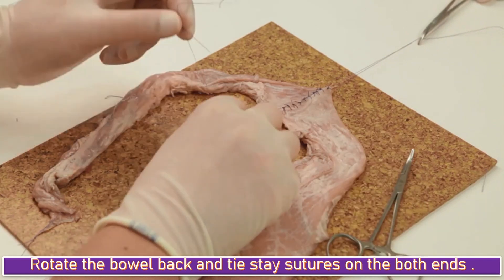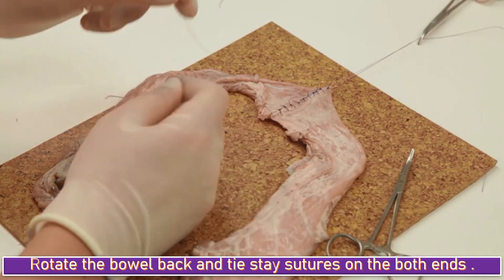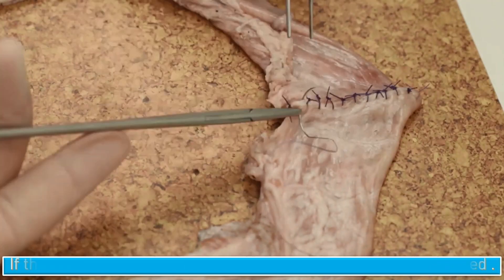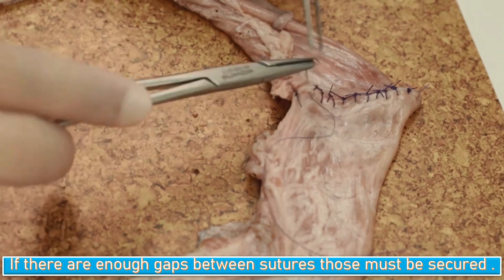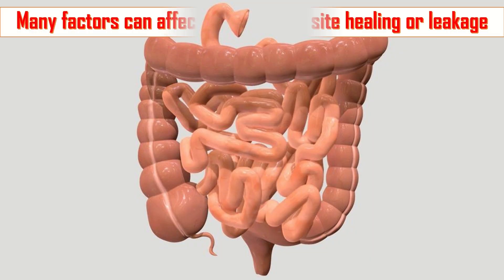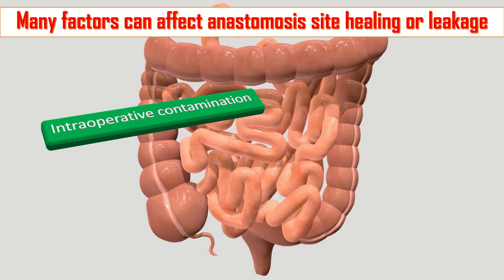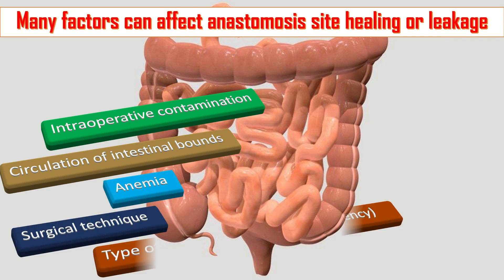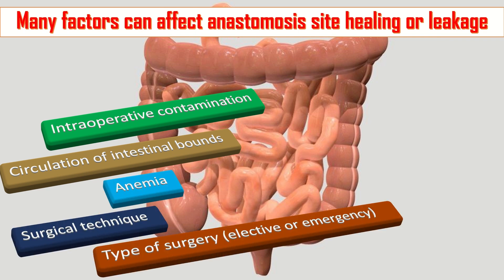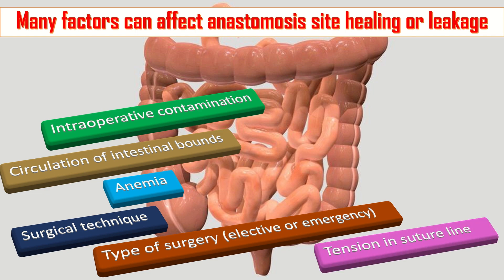If there are enough gaps between the sutures, those must be secured. There are many factors which can affect anastomosis site healing or leakage — for example, intraoperative contamination, circulation of intestinal blood supply, anemia, surgical technique, the type of surgery which can be elective or emergency, and tension in the suture line.